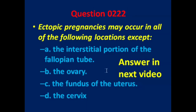This is a new question, which will be answered in the next video. The question is: ectopic pregnancies may occur in all of the following locations, except — A: the interstitial portion of the fallopian tube; B: the ovary; C: the fundus of the uterus; D: the cervix. The answer will be in the next video.